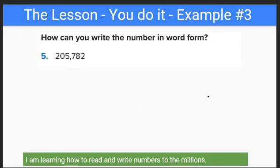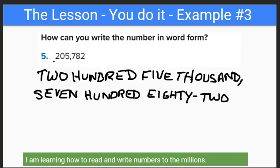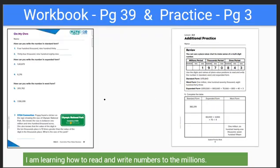Here's the last one — can you write this one in word form? We read this number as two hundred five thousand seven hundred eighty-two. Written in word form: two hundred five thousand — notice the comma right there — seven hundred eighty-two. A lot of kids want to write 'seven hundred and eighty-two,' but don't do that. We'll save 'and' for later. Right now, we just say seven hundred eighty-two.